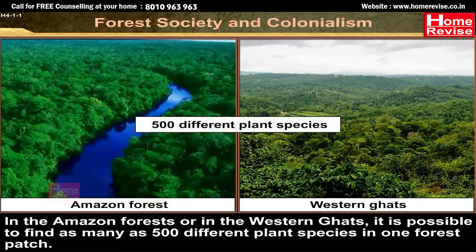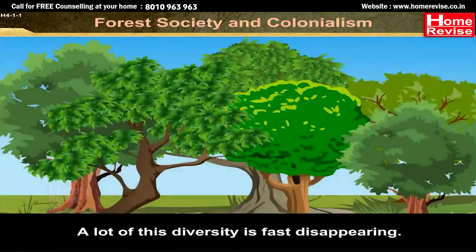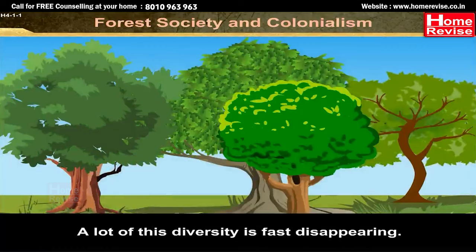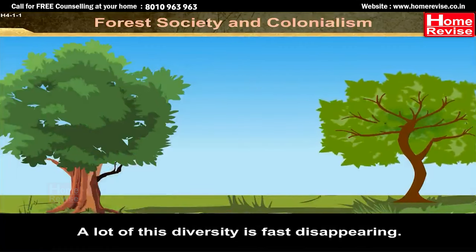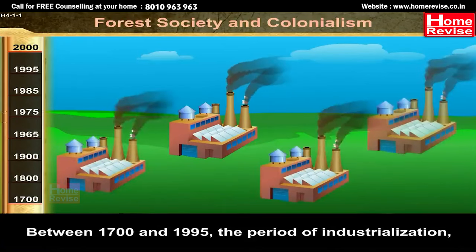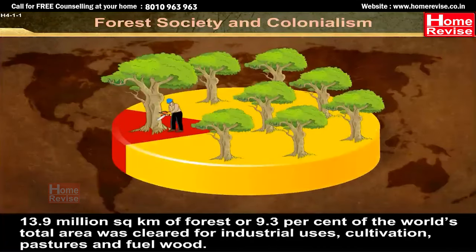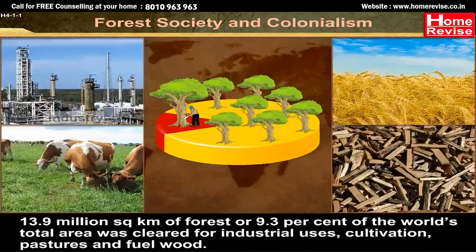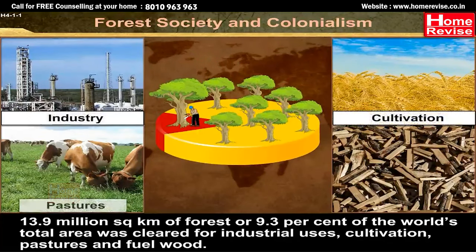But what's happening now? A lot of this diversity is fast disappearing. Between 1700 and 1995, the period of industrialization, 13.9 million square kilometres of forest, or 9.3% of the world's total area, were cleared for industrial uses, cultivation, pastures and fuel wood.